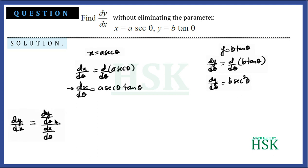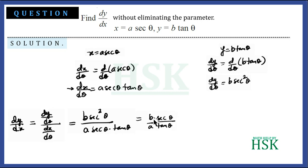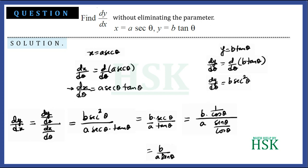So dy/dx = (dy/dθ) / (dx/dθ) = b sec²θ / (a sec θ tan θ). The sec²θ and sec θ cancel, giving b sec θ / (a tan θ). Writing sec θ = 1/cos θ and tan θ = sin θ/cos θ, the cos θ terms cancel, and we get dy/dx = b / (a sin θ), which is the required answer.